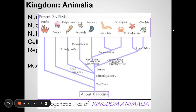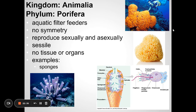Here are the groups of animals: Porifera, Cnidaria, Platyhelminthes, Nematoda, Mollusca, Annelida, Arthropoda, Echinodermata, and Chordata. Sponges — Porifera — are actually animals. They're filter feeders that stick in one place, suck in water, filter out bits of food, and squirt the water out. They are animals with the characteristics of animals.